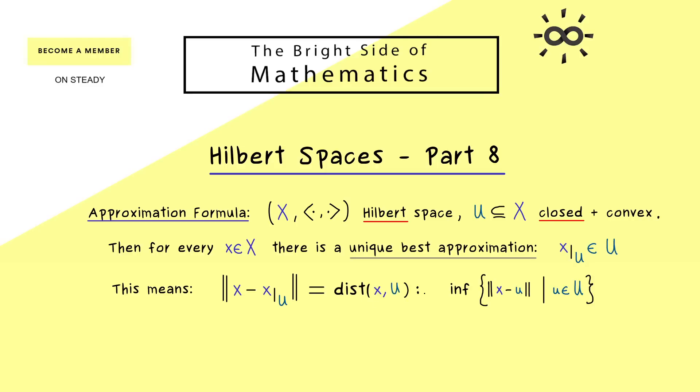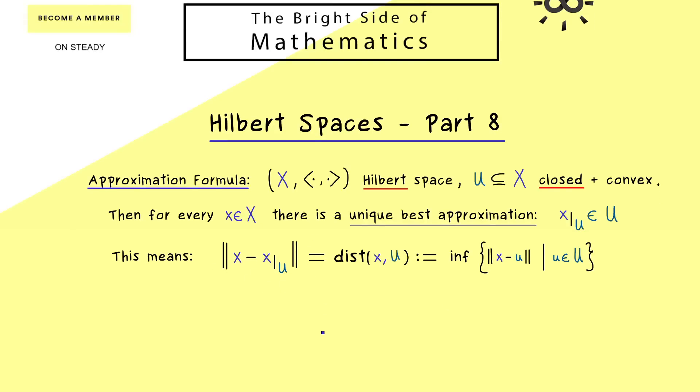Hence the length of this difference vector is exactly the distance between x and U. So please recall that this distance was defined by an infimum in the real numbers. Therefore it's clear that this infimum always exists but now the claim here is that the infimum is actually a minimum. And exactly this is what we will prove today.